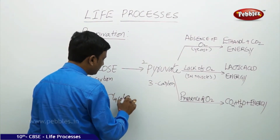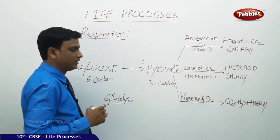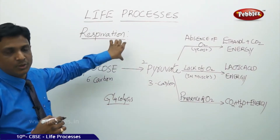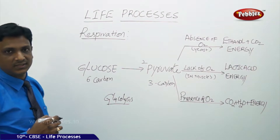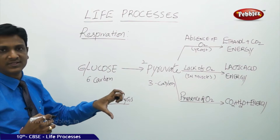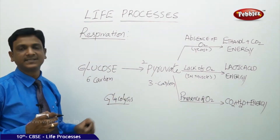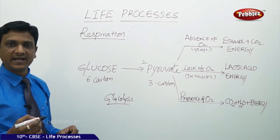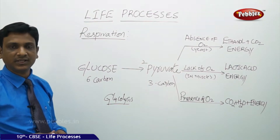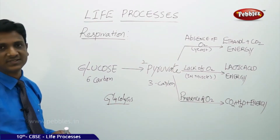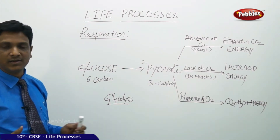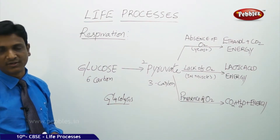Glycolysis means the breakdown of glucose into 2 molecules of pyruvic acid, which takes place in the cytoplasm. This is common for any kind of respiration, whether aerobic or anaerobic. Anaerobic organisms like bacteria and yeast carry out respiration without oxygen, while aerobic organisms like human beings carry out cellular respiration in the presence of oxygen.